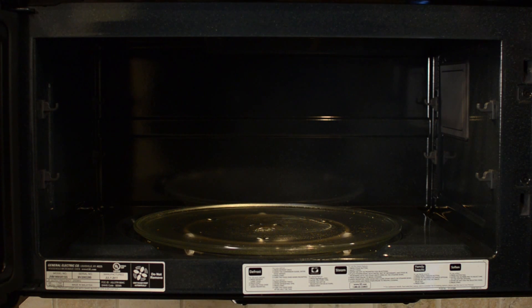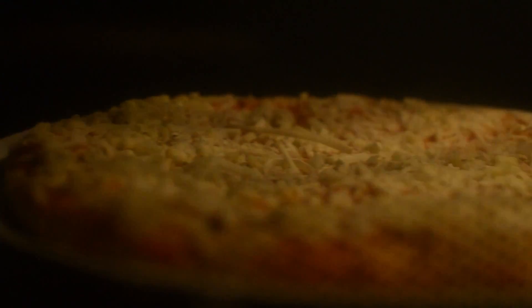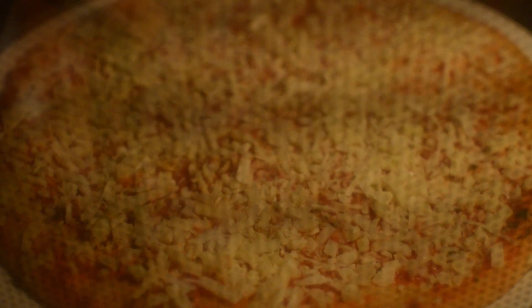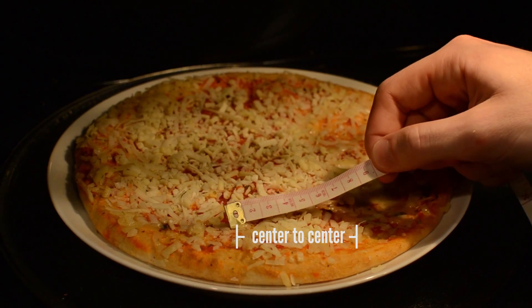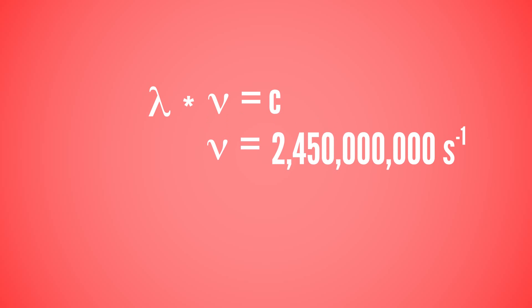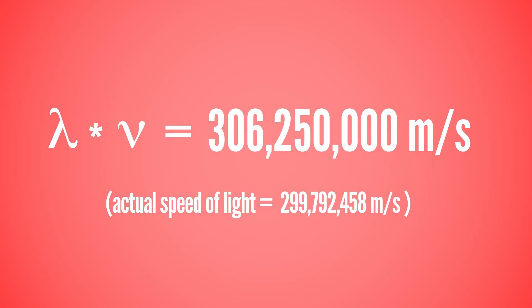Here's how to do this at home: first, take out the rotary tray or inactivate it, then put the pizza in the microwave, then just turn it on at low heat and let it go. When you see it start to melt, measure between the melty spots, double that to get the wavelength, and multiply it times the frequency, which is usually on the back or the front of the microwave. What do we get? The speed of light. Or, pretty close.